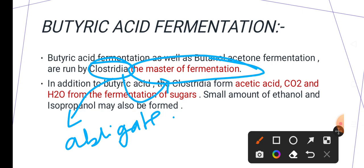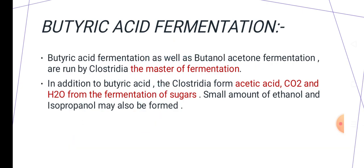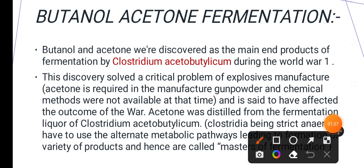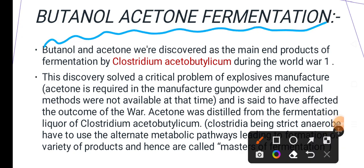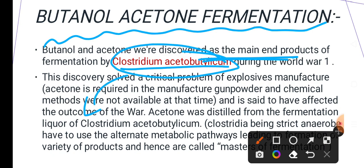Now, butanol acetone fermentation solved a very important problem during World War One — the production of acetone. Butanol acetone fermentation is run by Clostridium acetobutylicum, and this bacteria can give us a large amount of acetone.